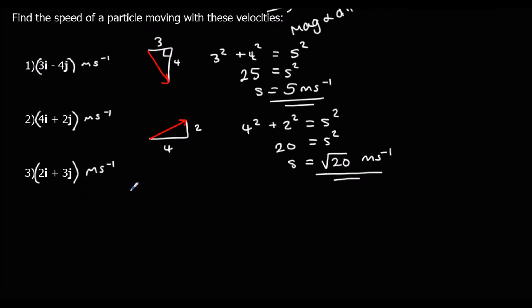And finally, the last one. It's gone along 2, up 3. So along 2, up 3. So 2 squared plus 3 squared equals the speed squared. 9 plus 4, 13. So the speed is root 13 meters per second.